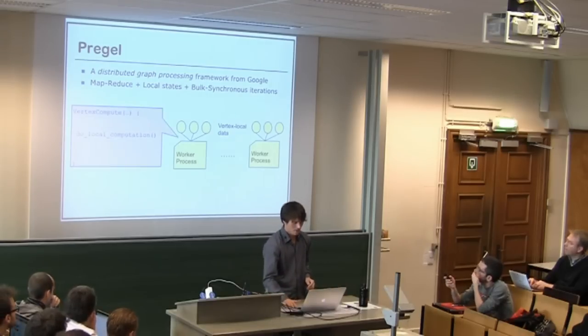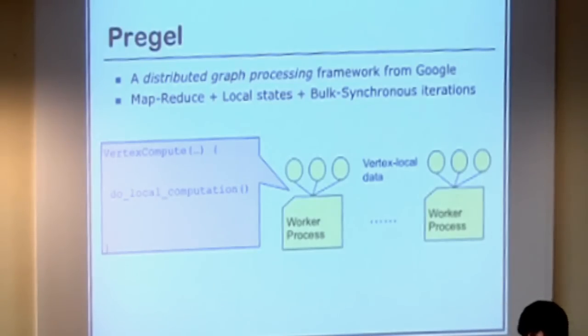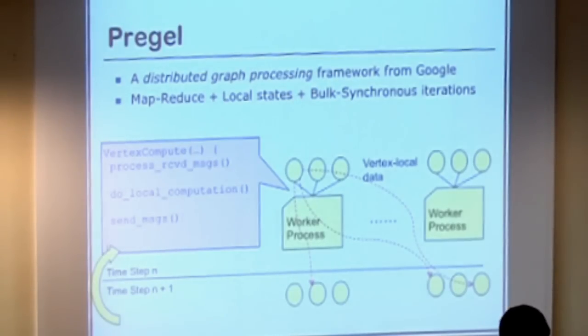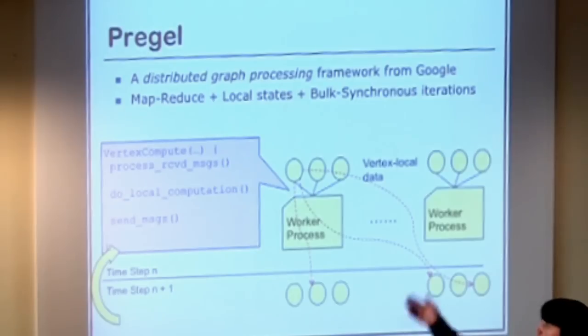And that has a few advantages. So the API for this system is very simple. There's one function for the vertex, which is, you do a local computation. You can send messages to other vertices. And the next step, they arrive. And then in the next step, you can receive those messages. And basically, you have three calls. Those are the core message calls that you can use. It's a very simple programming model.